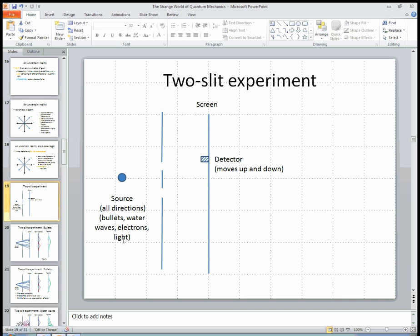So we have a screen with two slits in it so that whatever the stuff is can go through these two slits. And then it ends up on this screen here.